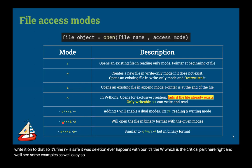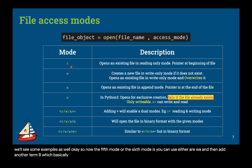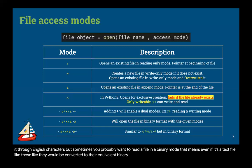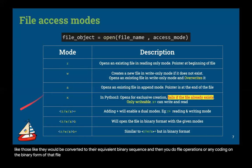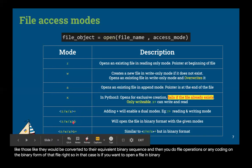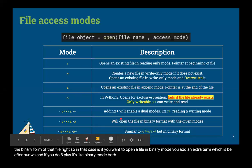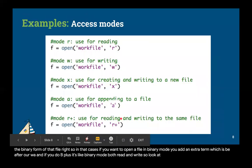You can also append 'b' to any mode — rb, wb, ab — to open the file in binary format. In binary mode, text characters are converted to their equivalent binary sequences. Adding 'b+' allows binary mode with both read and write.